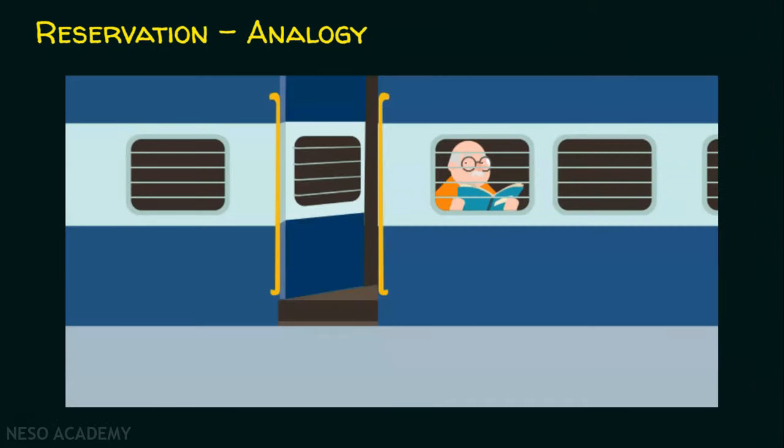Contemplate this scenario: suppose you have a very important meeting in New Delhi, but you are in Bengaluru and you prefer the train for travel. What if you don't reserve your seat? The seat is not reserved and you find a free seat you want to occupy. At the same time, another person travelling on the same train also finds that free seat. What happens when both of you try to occupy it at the same time? Obviously, it leads to a collision.